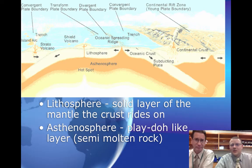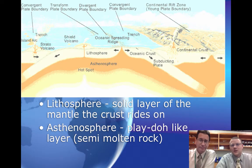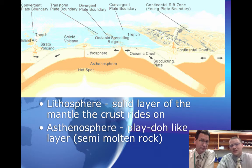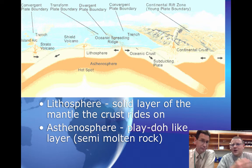Hey everybody. We were talking last time about the different interactions with the different plate boundaries — convergence, divergence, and transform — and we can see some of that in this picture. You can see oceans colliding with continents, oceans being pulled apart with divergence, ocean and ocean colliding creating convergence. Transform would be when they slip past each other, and we've talked about those boundaries.